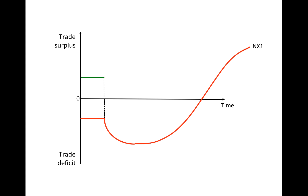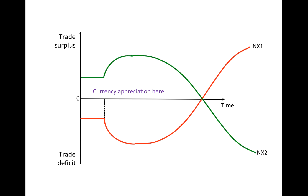We can also look at the inverted J-curve, which is the opposite. If a currency appreciates, at the beginning net exports will actually increase, and it is only over time that net exports will start falling.